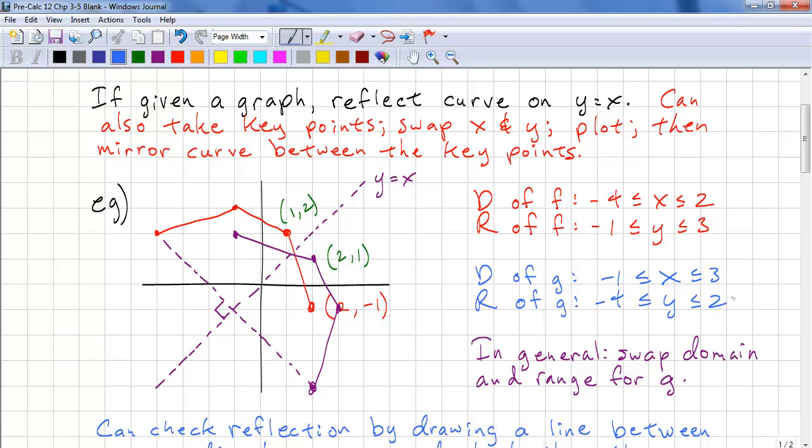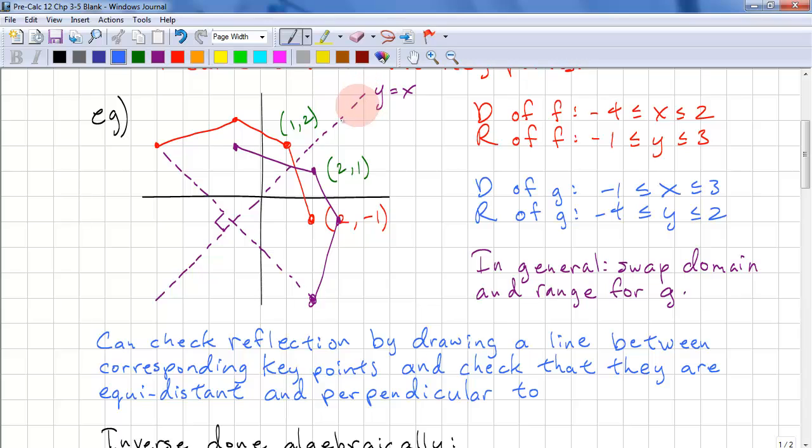And let's just look at this. Our x for g is negative 1 to 3. And we look at the y. We go from negative 4 to 2. If we don't have this line, you can draw that line. And you can check the reflection and then making sure that the corresponding points are equidistant and perpendicular to y is equal to x.